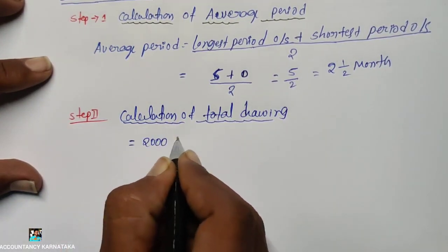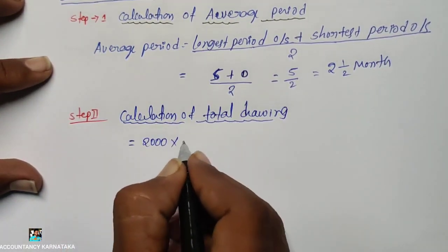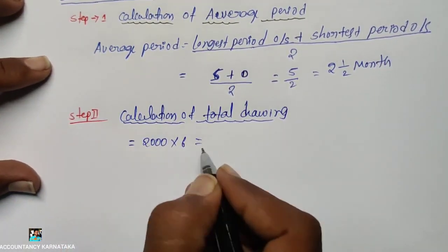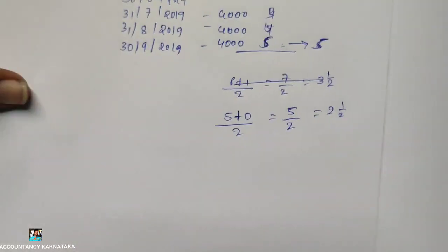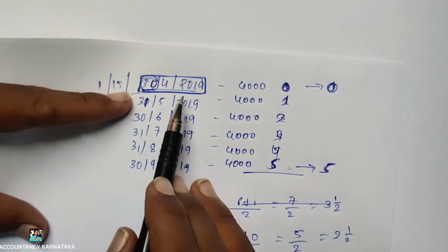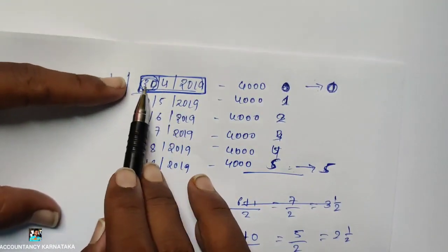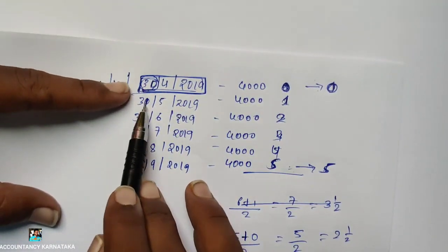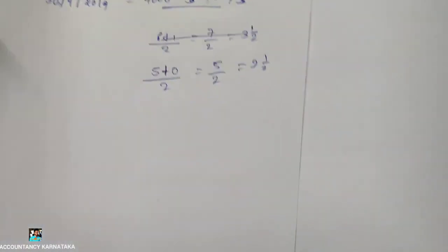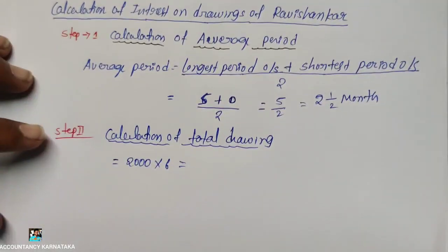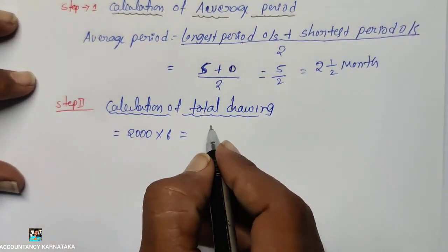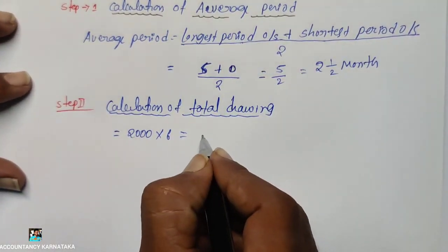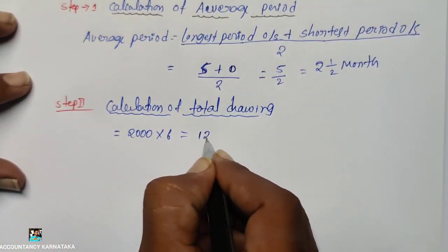Total drawings equals 2000 into 6 months, because there are 6 months (1, 2, 3, 4, 5, 6). So the answer is rupees 12,000.